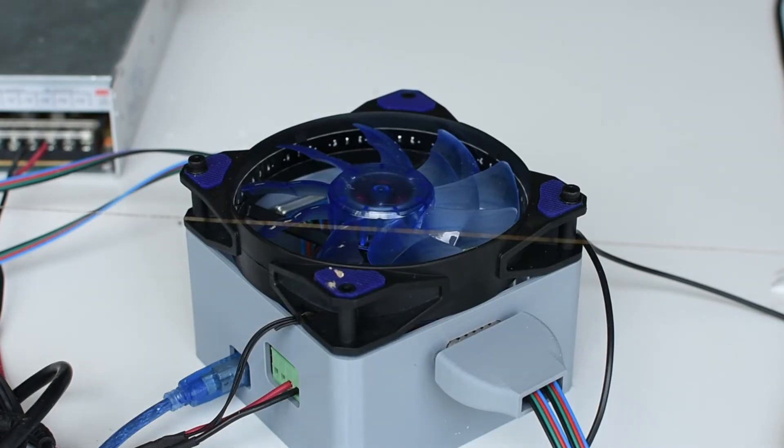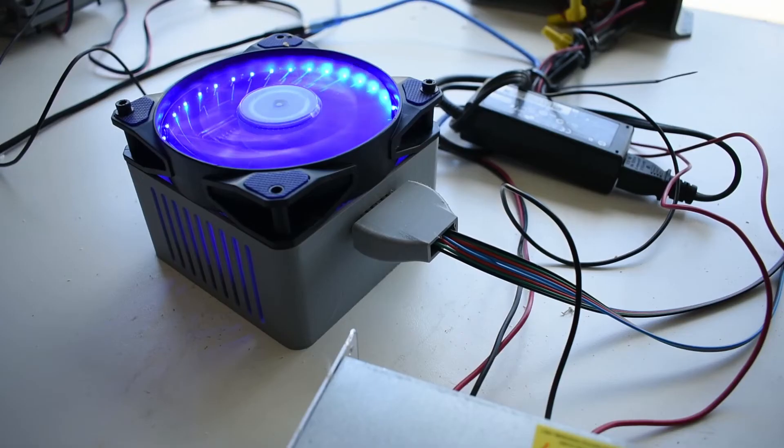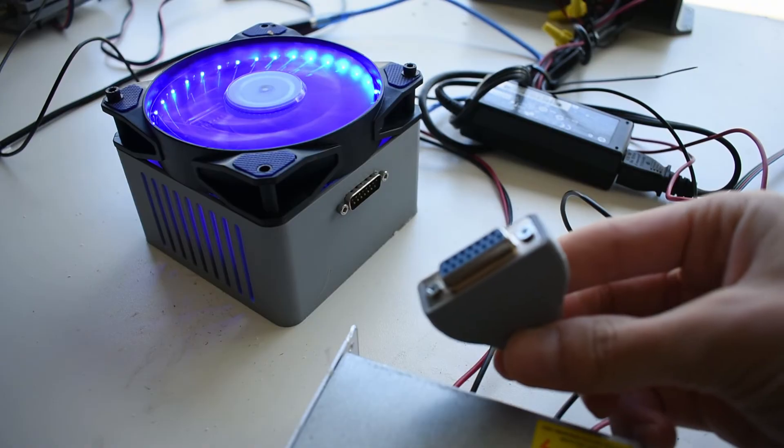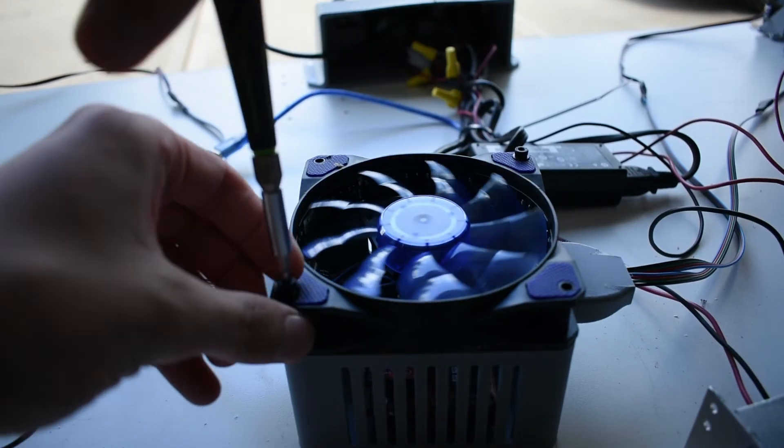So to control each one of these motors independently, I have an electronics box with a cooling fan on top. The cooling fan has LEDs for that extra RGB power. I have the motor wires soldered into these VGA connectors, so I can quickly connect and disconnect the motors.